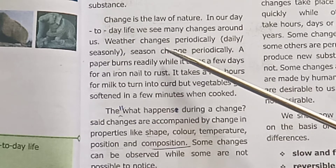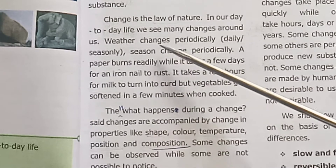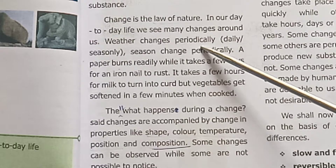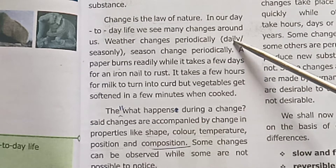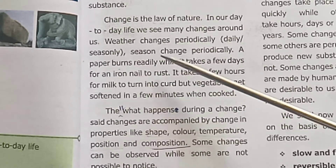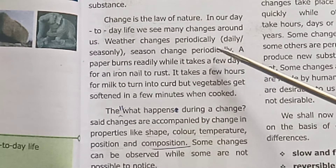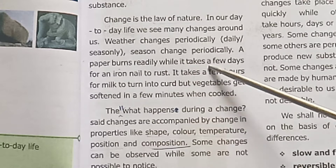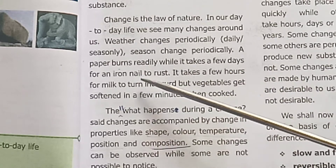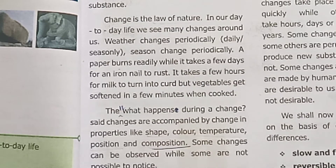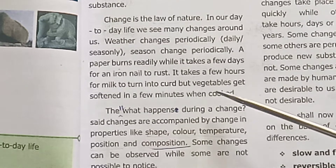The weather changes periodically. In our day-to-day life, we see many changes around us. Season changes, for example: a paper burns readily while it takes a few days for iron to rust. That is why we have fast changes and slow changes.